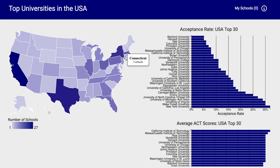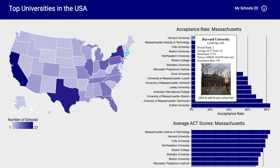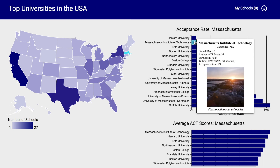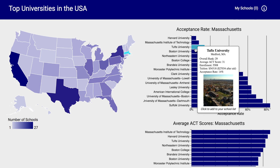The biggest exception to this rule was the state of Massachusetts, which, despite having a relatively small population, is known for having many top-tier universities, such as Harvard, MIT, Boston University, and Tufts University.